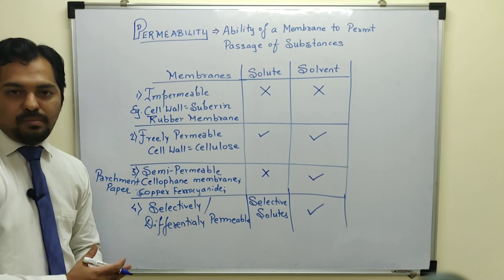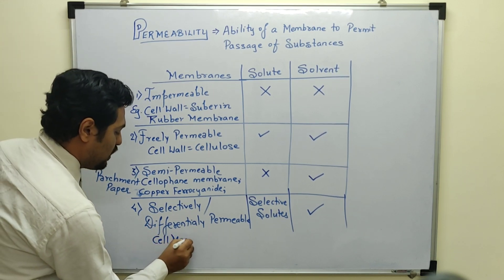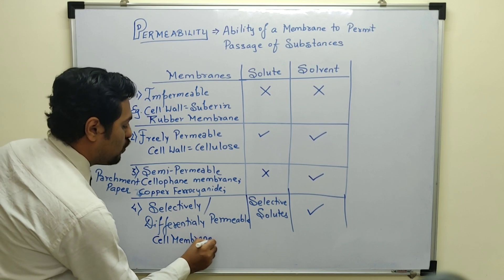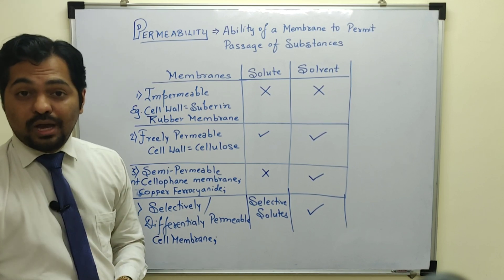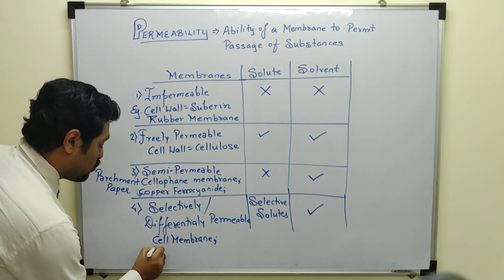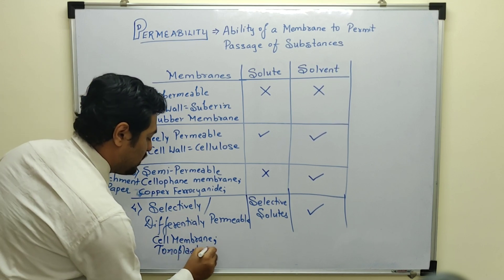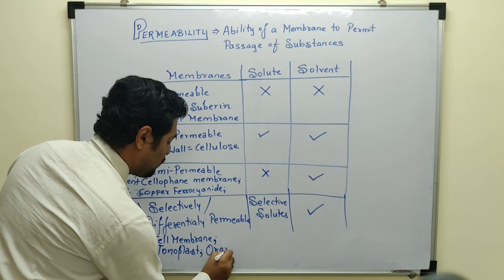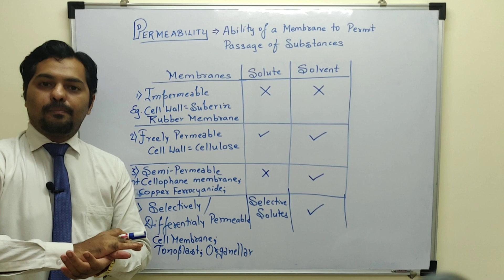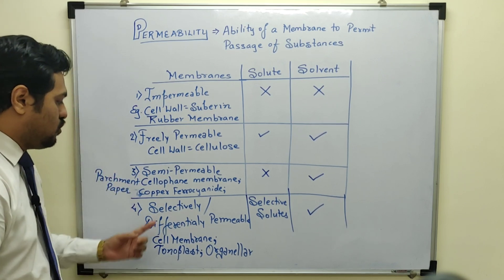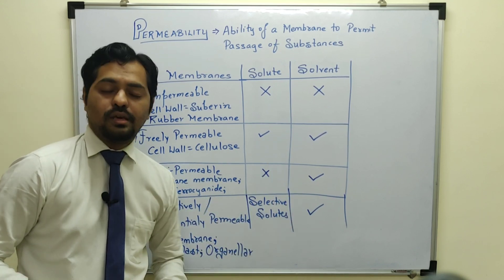Selectively permeable membranes are the biological membranes. The cell membrane is selectively permeable, as we discussed in the fluid mosaic model. Even the membrane of the vacuole — called the tonoplast — is selectively permeable. The membranes present in cell organelles, such as the mitochondrial membrane and plastid membranes, are also selectively permeable — allowing only selective solute molecules while allowing the solvent.